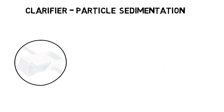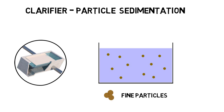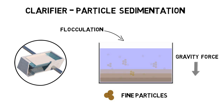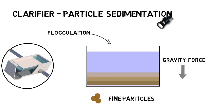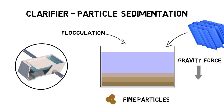Afterwards, fine particles are clumped together using flocculation and then settled down by gravity separation in the primary clarifiers. To increase particle separation significantly, lamellar plate settlers as provided by AET are installed.